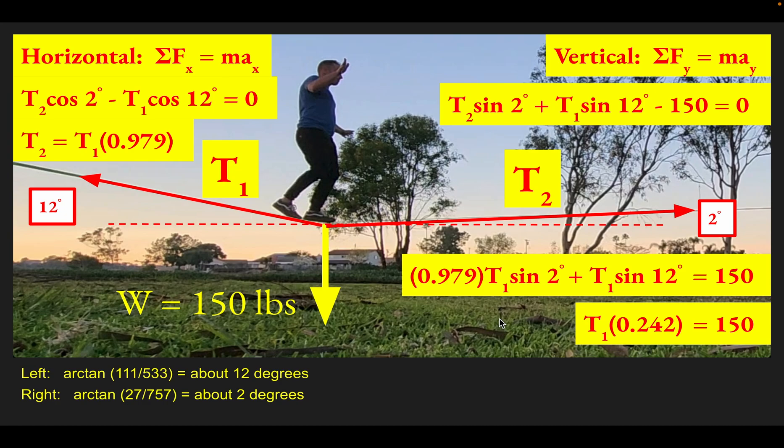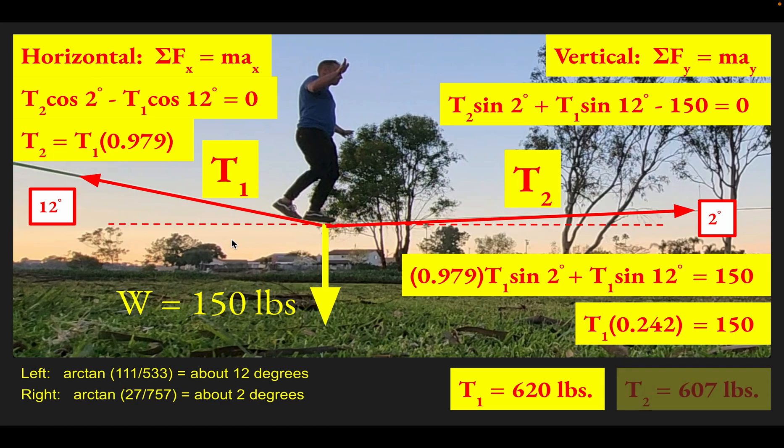Finally, solving for T1, we get 620 pounds of tension in this left hand side of the line. Then plugging in T1 here—0.979 times that—would be about 607 pounds. That would be the tension pulling to the right on this point.